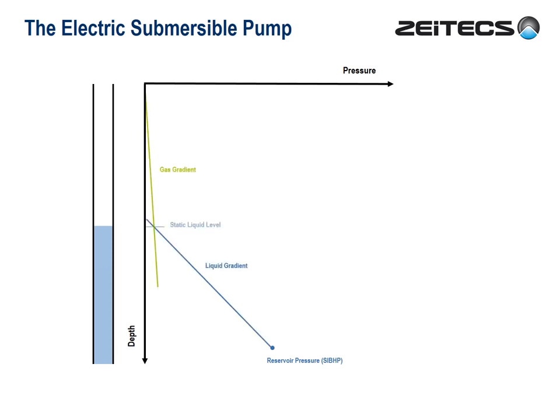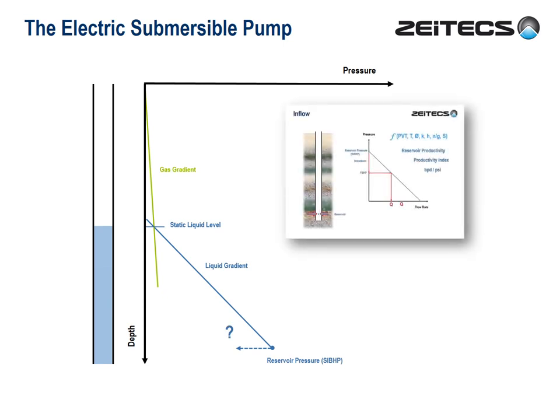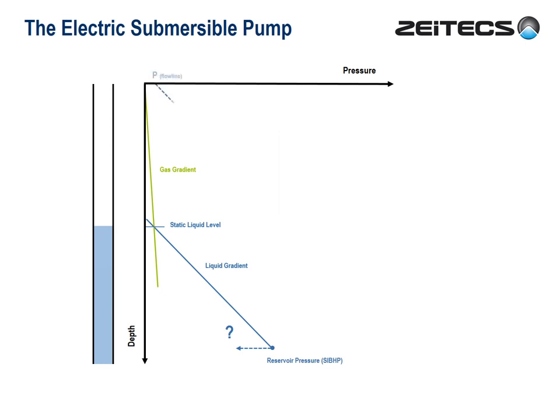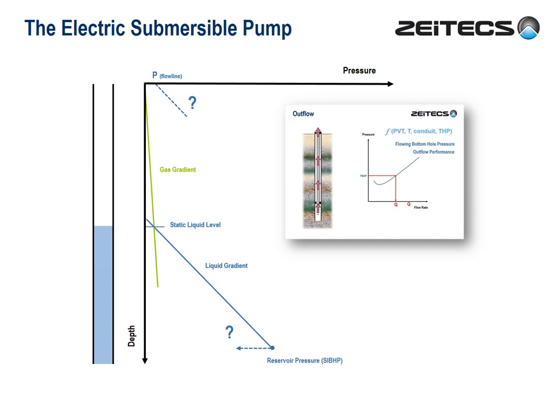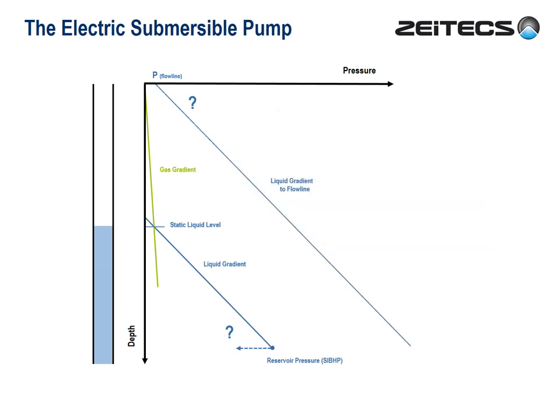The static liquid level is naturally determined by the intersection of the fluid gradient up from the reservoir and the gas gradient down from surface. Now there are two things we must do to make this well flow, and these are not negotiable. Firstly, we must draw down the reservoir — reduce the bottom-hole pressure — then the reservoir will deliver fluid according to its productivity index. Secondly, we must match the flowline pressure at surface, otherwise the fluids will not unload. The problem is there's a big gap between the static liquid gradient and where we need to be.